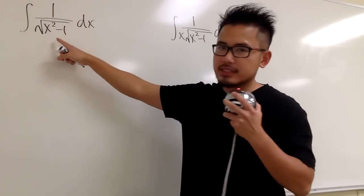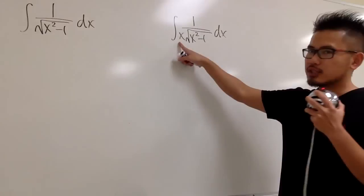Two integrals on the spot. The first one is the integral of 1 over square root of x squared minus 1, and the other one has this extra x down below in the denominator as well.